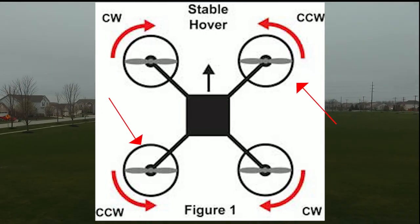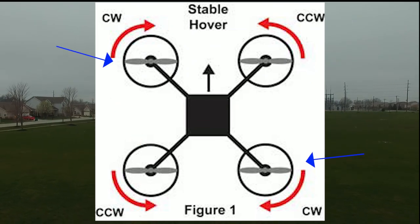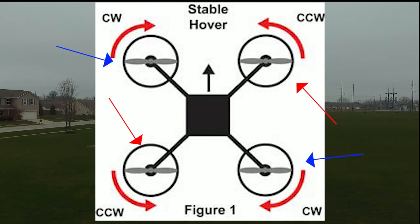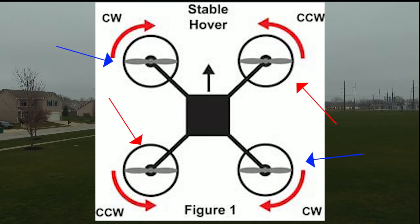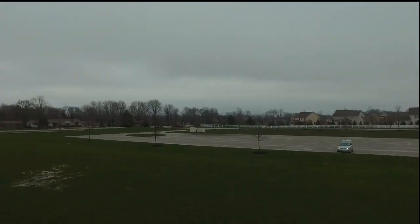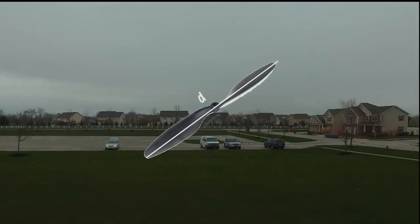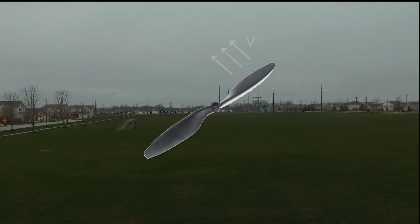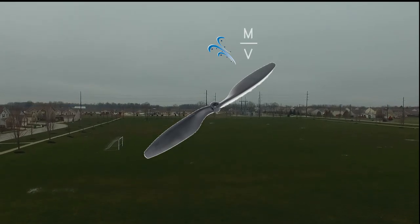To rotate the quadcopter, the motors diagonal from each other must speed up while the other pair slows down. This is to maintain a net thrust. The diagonal motors rotate in the same direction, creating a torque that twists the quadcopter in a certain direction. The four motors create upward thrust that is determined by the diameter of the propeller, velocity of the propeller, the delta velocity of air accelerated by the propeller, and the air density.